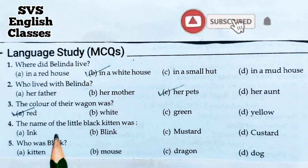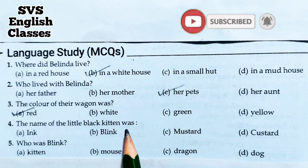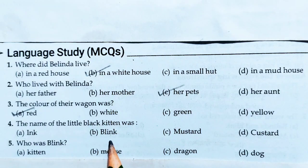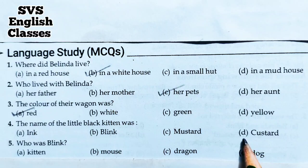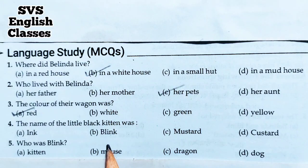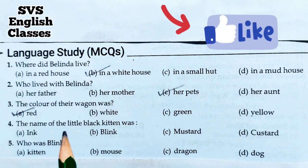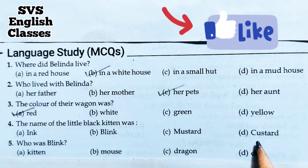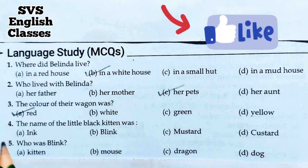Number four: The name of the little black kitten was - A. Ink, B. Blink, C. Mustard, D. Custard. Students, we can only answer these multiple choice questions correctly when we know the lesson. Ink was the name of the little black kitten. Blink was the name of the mouse. Mustard was the name of the dog. Custard was the name of the dragon. So the correct option is A - Ink.